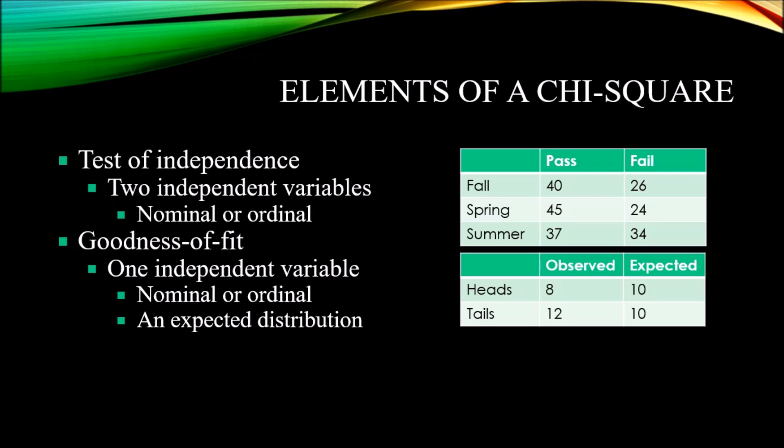An example of the nominal level of measurement can be found here to the right. We have fall, spring, and summer. Consider that you have some sort of specialized counseling training program, and you have different instructors teaching this program. You have a fall, spring, and a summer set of instruction.